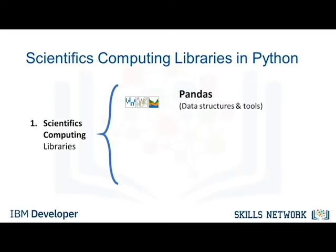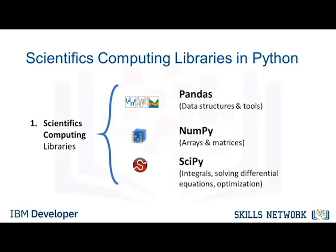Pandas offers data structures and tools for effective data manipulation and analysis. It provides fast access to structured data. The primary instrument of Pandas is a two-dimensional table consisting of column and row labels, which are called a DataFrame. It is designed to provide easy indexing functionality. The NumPy library uses arrays for its inputs and outputs. It can be extended to objects for matrices, and with minor coding changes, developers can perform fast array processing. SciPy includes functions for some advanced math problems, as listed on this slide, as well as data visualization.